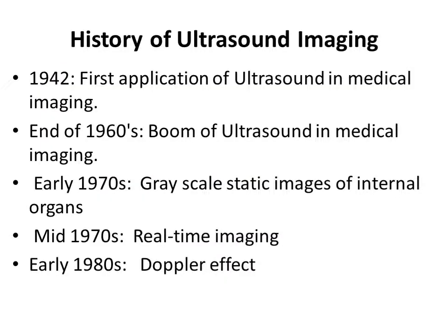Here is some information about the history of Ultrasound Imaging. In 1942, the first application of ultrasound in medical imaging occurred. By the end of the 1960s, there was a boom of ultrasound in medical imaging. In the early 1970s, grayscale static images of internal organs were used. By the mid-1970s, real-time imaging was discovered and used. In the early 1980s, the Doppler effect was applied.